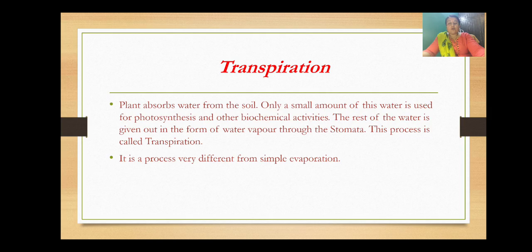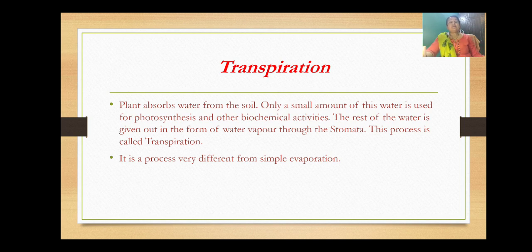Since we are going to describe transpiration, let's understand the process first. Plants absorb water from the soil and only a small amount of this water is used for photosynthesis and other biochemical activities. The rest of the water is given out in the form of water vapor through the stomata. Transpiration is a process by which the plants lose water in the form of vapor through the aerial parts of the plants.